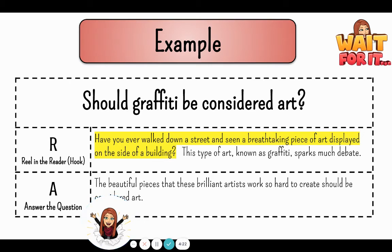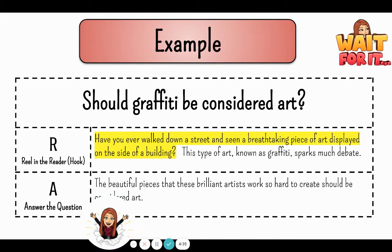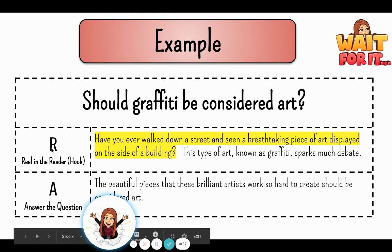The second sentence, which is the A, is my answer: 'The beautiful pieces that these brilliant artists work so hard to create should be considered art.' Now you know exactly where my answer is. Sentence one hooks the reader with a question for them to think about, and then my second sentence is where I answer the question.